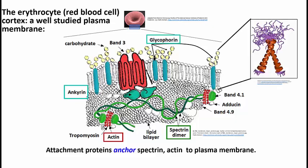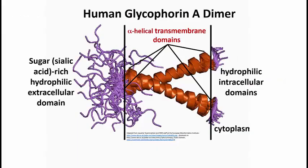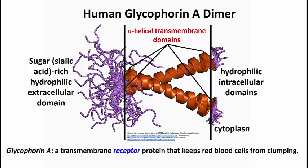Glycophorin A is a transmembrane protein. It crosses the membrane with that alpha helical region of hydrophobic amino acids, and its function is to prevent red blood cells from binding to one another. In a way, it's a kind of receptor that says on the surface of one cell to another red blood cell: I don't want to have anything to do with you. It keeps red blood cells from clumping when they're not supposed to, to keep your circulation going freely, so that you don't develop blood clots.